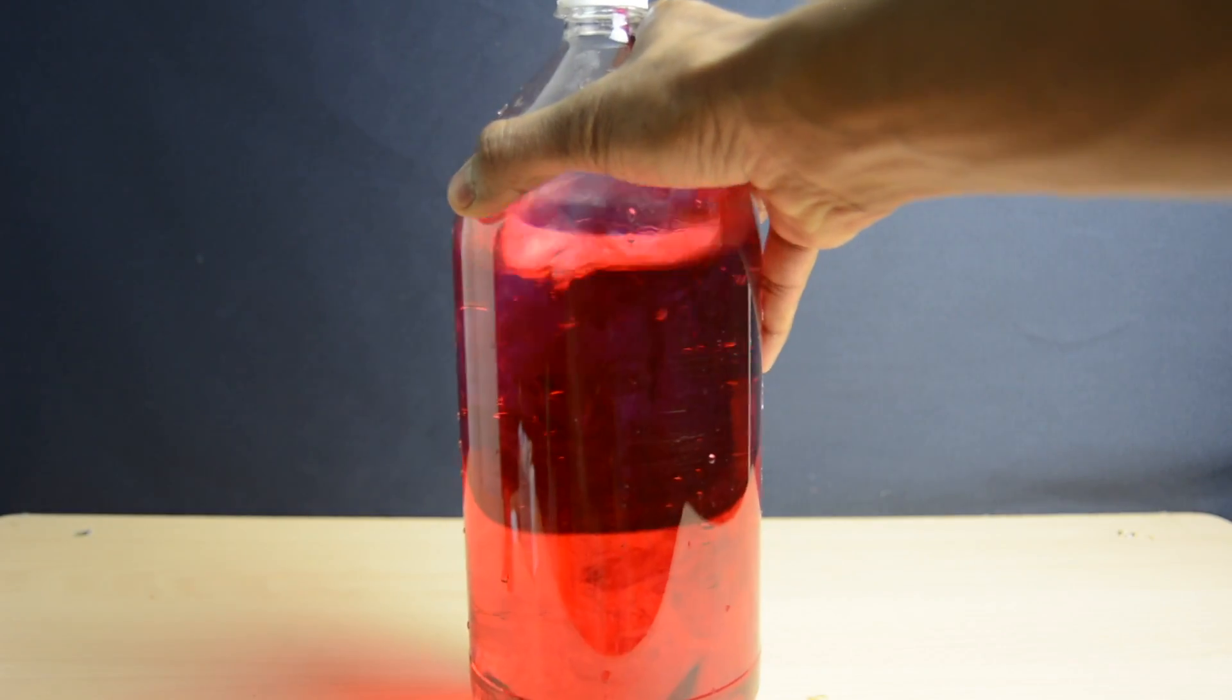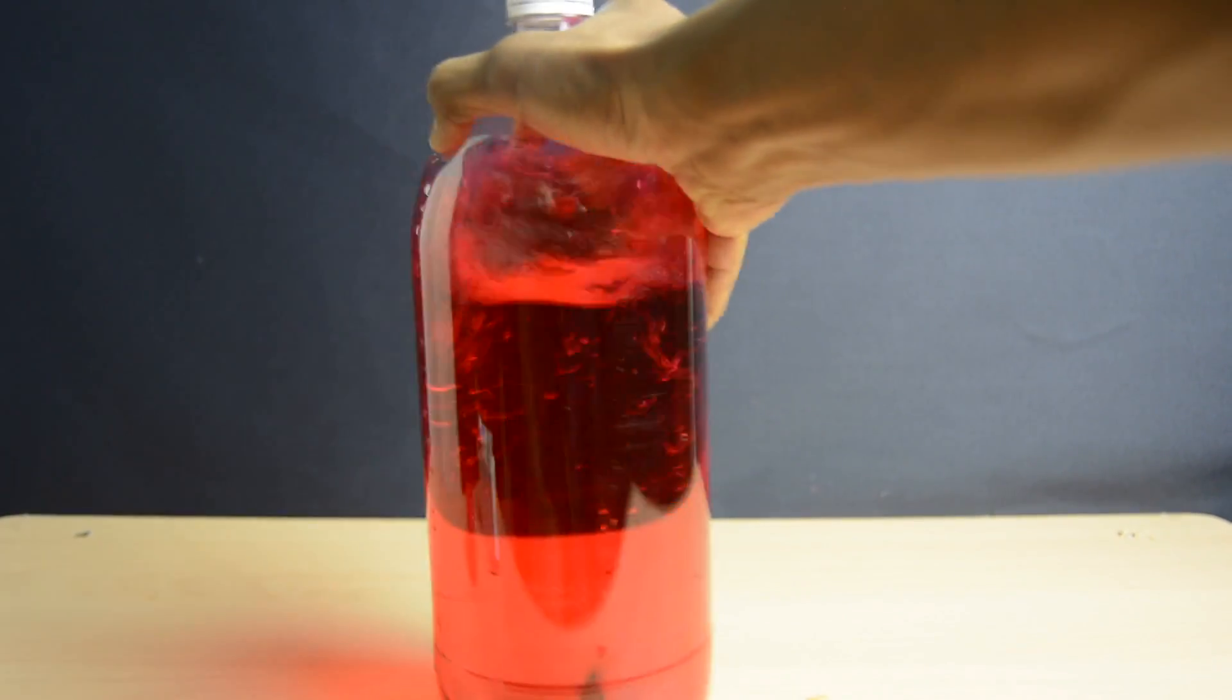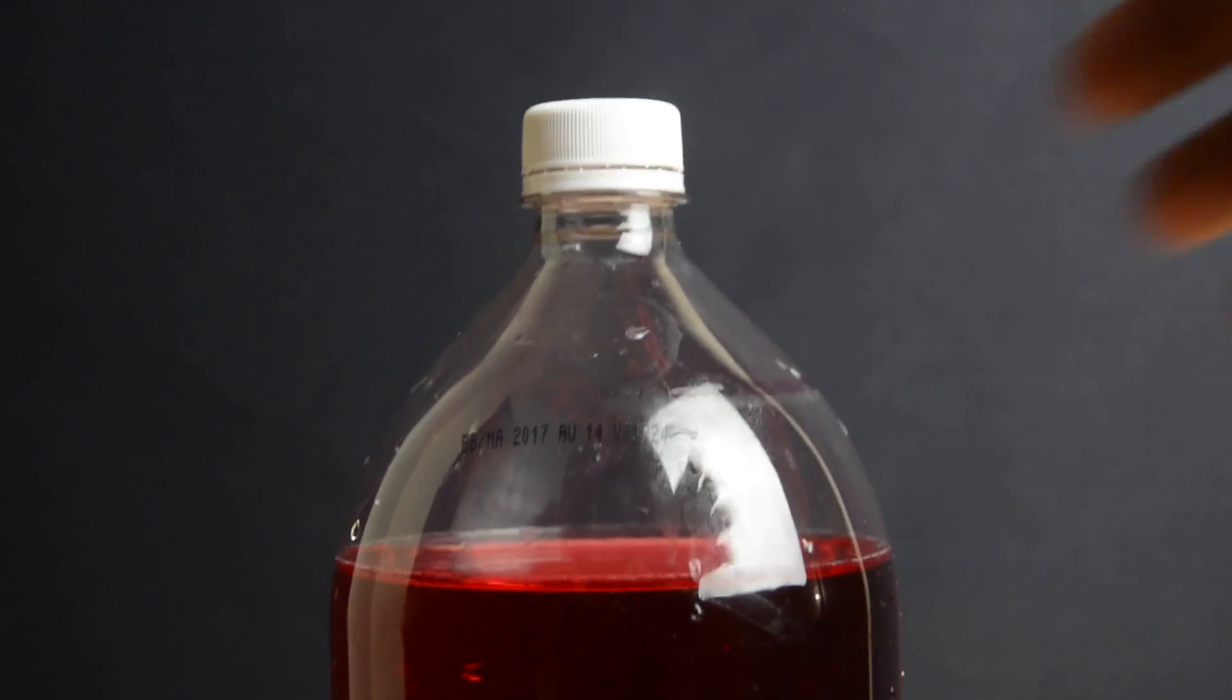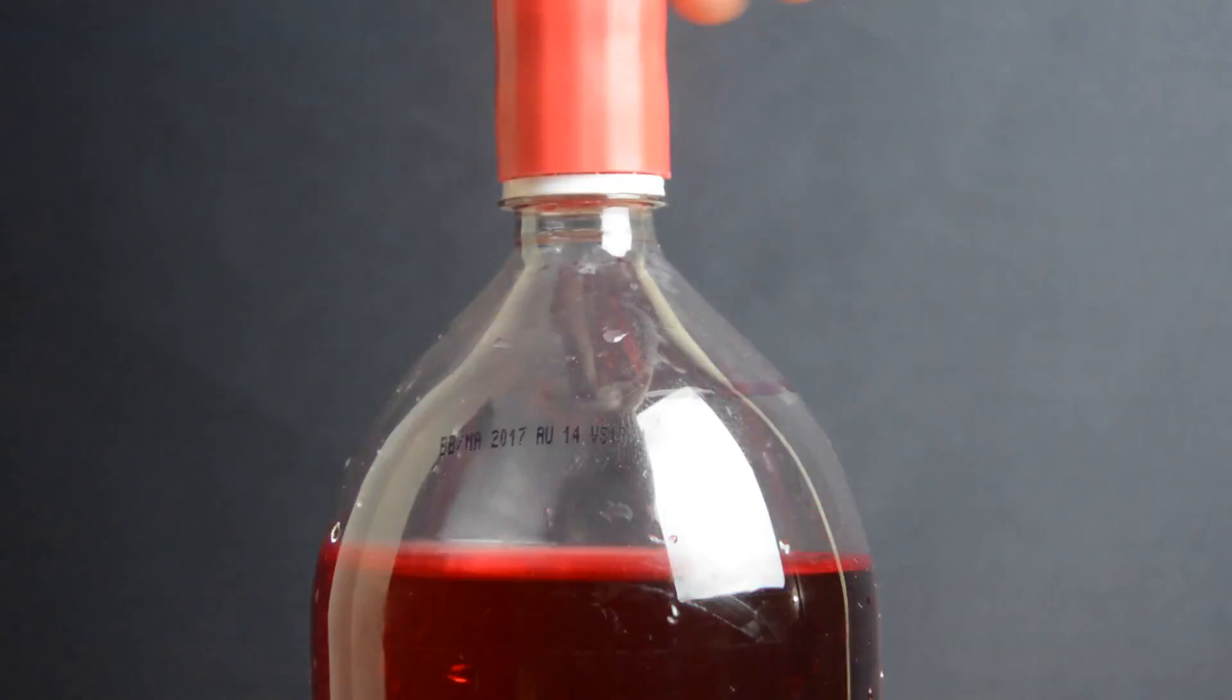Just give it a small shake to get all the food coloring really nice and mixed together. Alright, so now that we got all the desired water and coloring inside the bottle, go ahead and open up the cap and put this little funnel on.